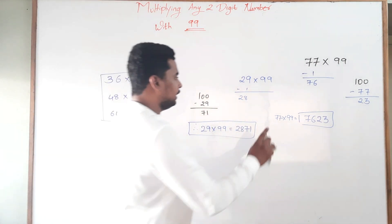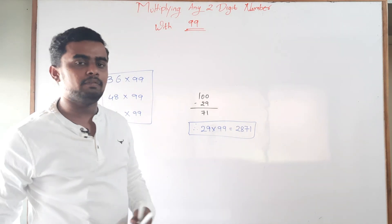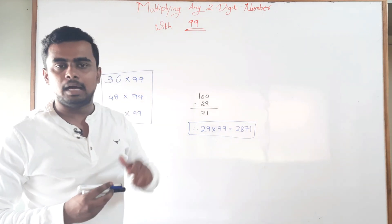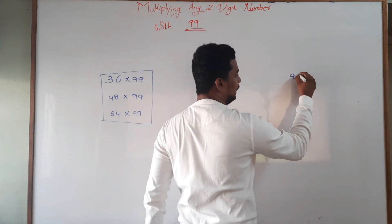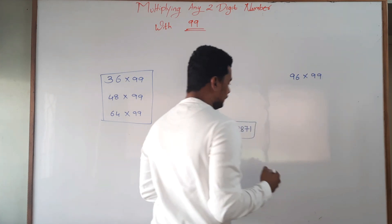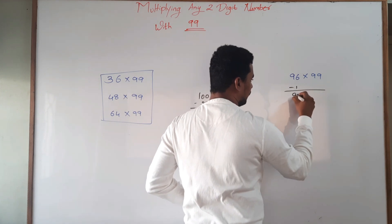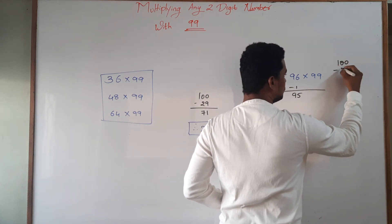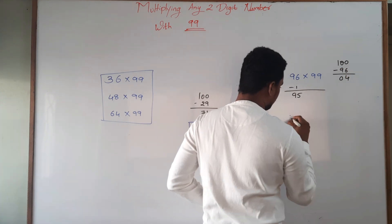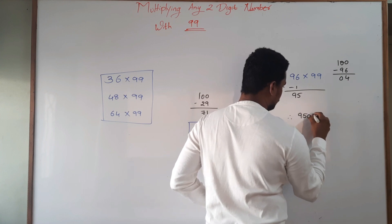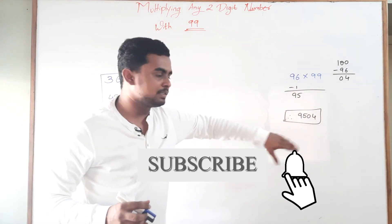The final number we will solve involves two numbers close to 100, and we will verify the answer using the other method — you will see the link in the eye button for multiplying numbers close to 100. I will take 96 multiplied by 99. Using today's trick: 96 minus 1 gives 95; 100 minus 96 gives 4, but I have to write 04. So the answer is 9504.